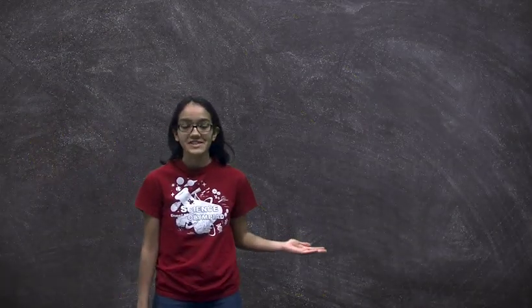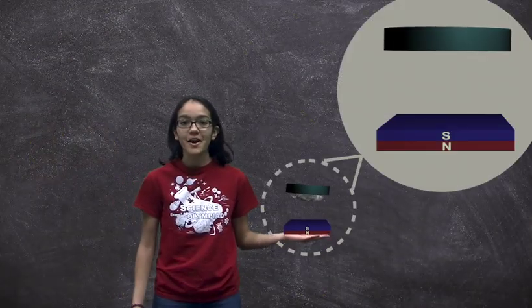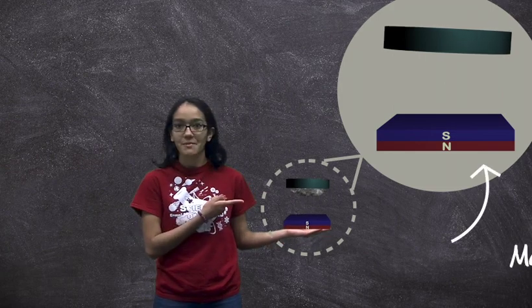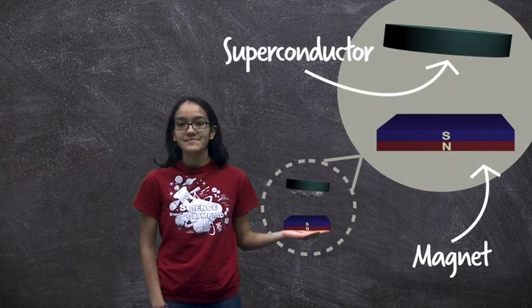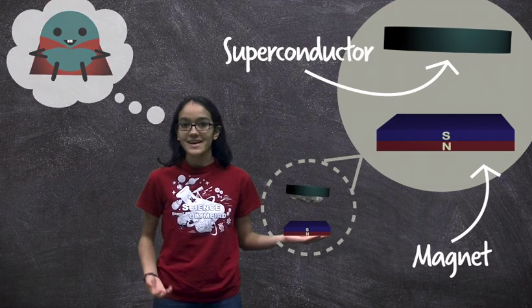So what is quantum levitation? Simply put, it's making an object hover in midair using only a magnet. We call this object a superconductor. You can think of a superconductor as a superhero.